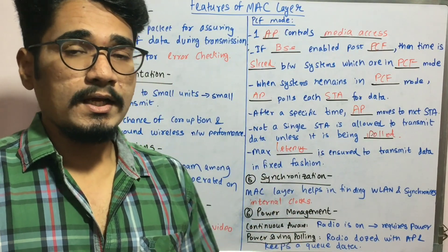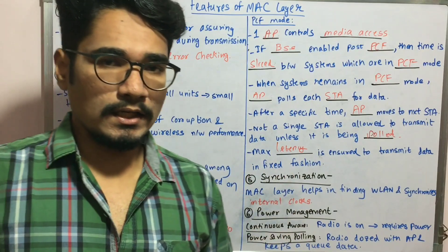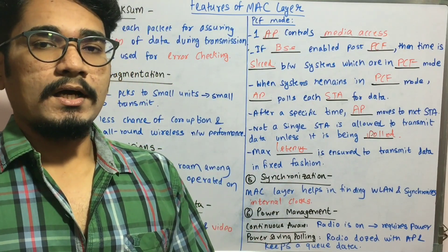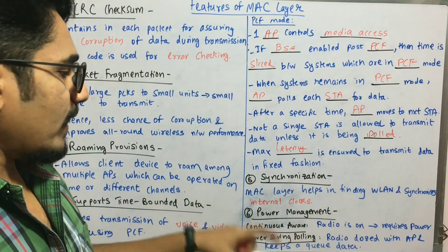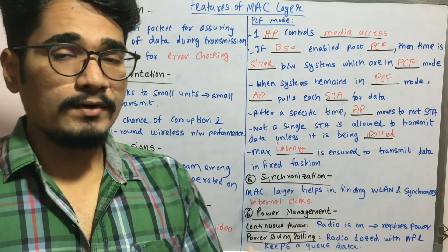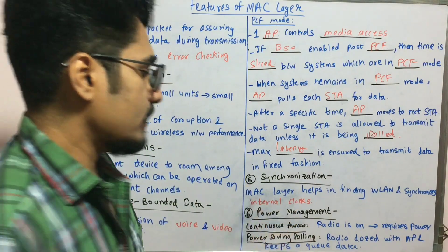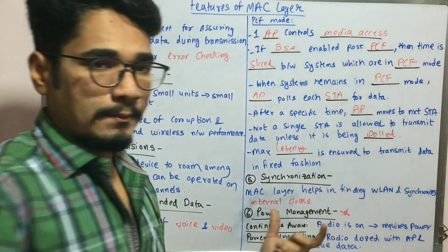Then we have synchronization. The MAC layer helps in finding the neighboring systems around it and then synchronizes their internal clocks so that they can operate in a synchronized fashion.